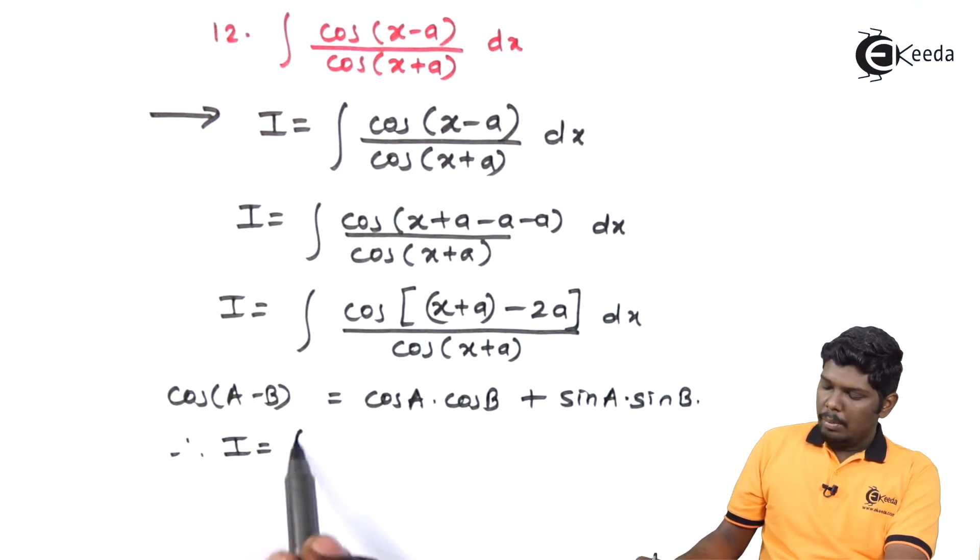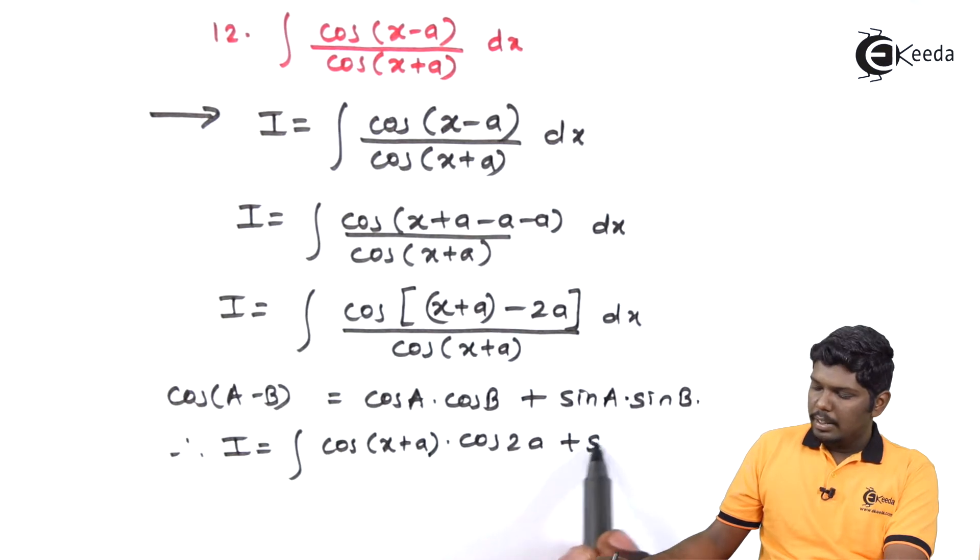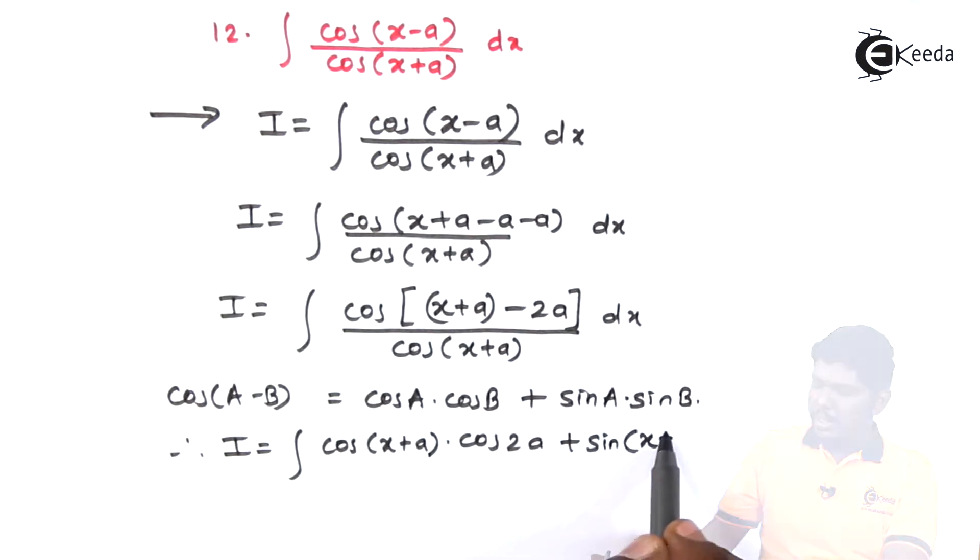Therefore, I will be cos of x plus a into cos 2a plus sin of x plus a into sin 2a divided by cos(x+a) dx.